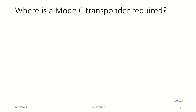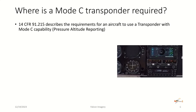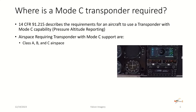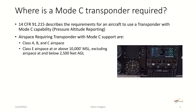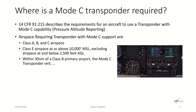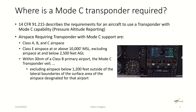So where is a Mode C transponder required? 14 CFR 91.215 describes the requirements for an aircraft to use a transponder with Mode C capability, or pressure altitude reporting capability. Airspace requiring a transponder with Mode C support includes: Class Alpha, Bravo, and Charlie airspace; Class Echo airspace at or above 10,000 feet MSL, excluding airspace at and below 2,500 feet AGL; and within 30 nautical miles of a Class B primary airport — the Mode C veil — excluding airspace below 1,200 feet outside of the lateral boundaries of the surface area of the airspace designated for that airport.